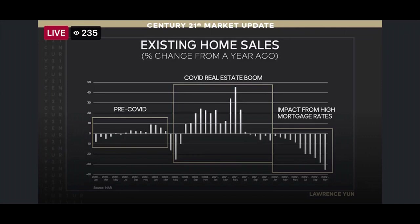First up, you'll see a graph of existing home sales. You'll see three boxes: pre-COVID production, 2021 — the COVID boom with lower interest rates in the twos and 30% interest — and then 2022, the impact when interest rates were reversed and went higher into the sevens as the market corrected.